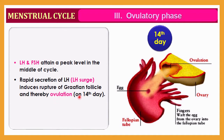After ovulation occurs on day 14, the ruptured Graafian follicle, which was previously responsible for estrogen secretion, is converted into the corpus luteum. The corpus luteum is now responsible for the secretion of progesterone.